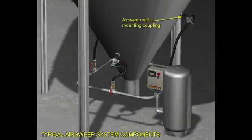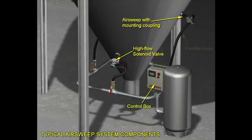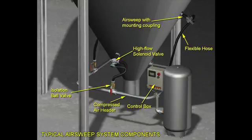Typical components of the air sweep system include the air sweep nozzles and high flow solenoid valves, a sequence controller, flexible hose connections, isolation valves, compressed air header piping, and an air reservoir tank.